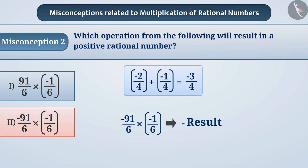Therefore, they start accepting option 2 as an incorrect answer. But the correct understanding is that the product of two negative rational numbers is always a positive rational number. Hence, the correct answer is option 2.